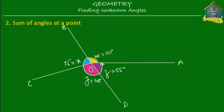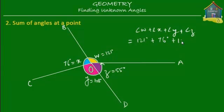Now all we do is add up all the angles: angle W plus angle X plus angle Y plus angle Z equals 121 degrees plus 76 degrees plus 108 degrees plus 55 degrees, which equals 360 degrees. So the sum of angles at a point — in this case the sum of all these yellow, blue, pink, and purple angles at point O — is equal to 360 degrees.